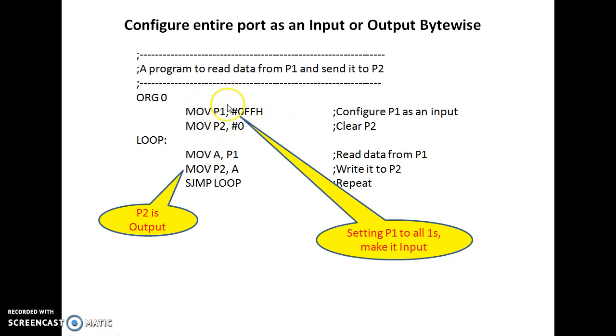We can write FFH to port 1 so entire port is configured as input. We have cleared port 2 so that later on we can reflect the output read from port 1 through the accumulator to port 2. So this is the initialization part and this is the main loop.